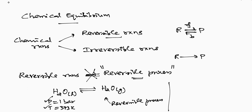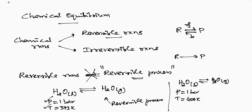Suppose I take the same reversible reaction, H2O liquid giving H2O gas, but now I keep the pressure at one bar and the temperature at, say, 400 Kelvin. At this pressure and temperature, this reaction may still occur in a reversible manner — we can call it a reversible reaction. However, this reversible reaction should not be called a reversible process. This is not a reversible process.